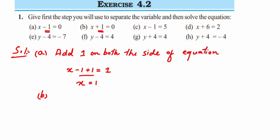For part (b), x plus 1 is equal to 0. I want to remove that plus 1. I cannot add 1 here because 1 plus 1 would become 2, so I have to subtract 1 here so that the 1 is removed from the left-hand side.